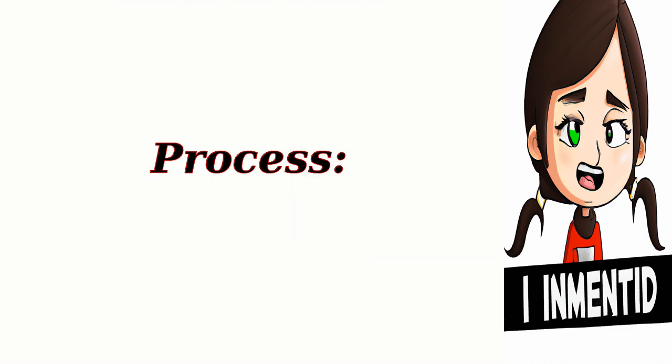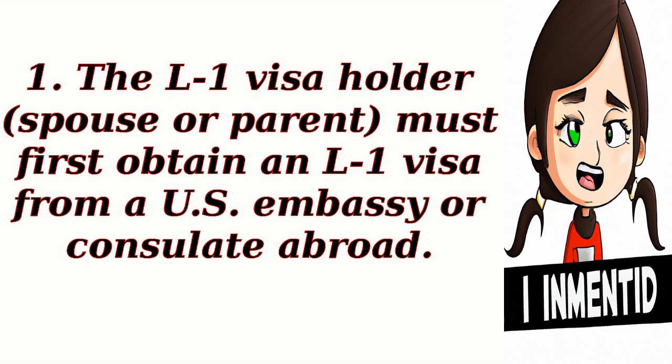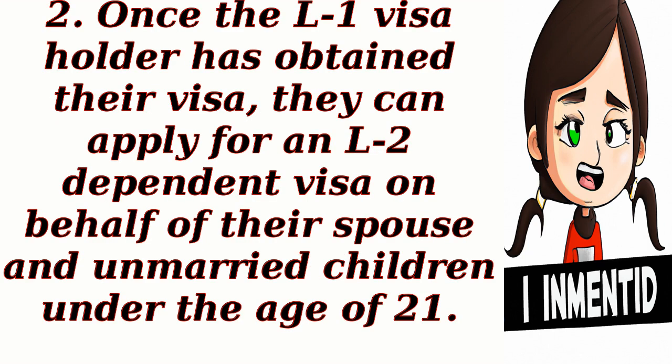Process: The L-1 visa holder's spouse or parent must first obtain an L-1 visa from a U.S. embassy or consulate abroad. Once the L-1 visa holder has obtained their visa, they can apply for an L-2 dependent visa on behalf of their spouse and unmarried children under the age of 21.